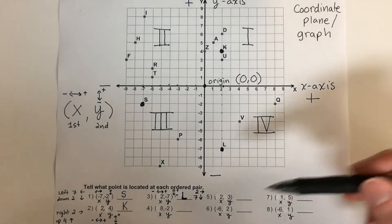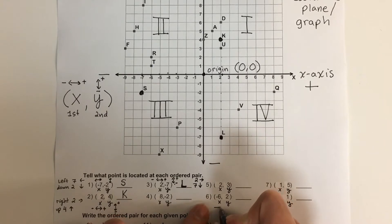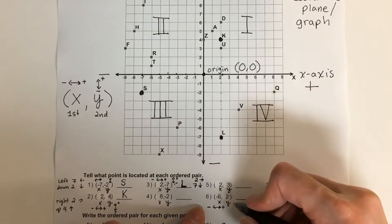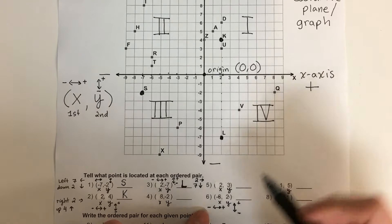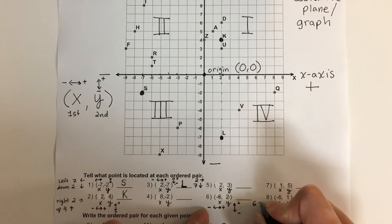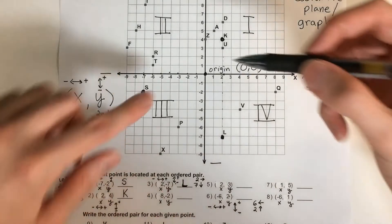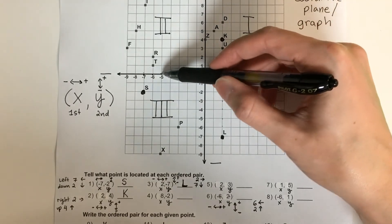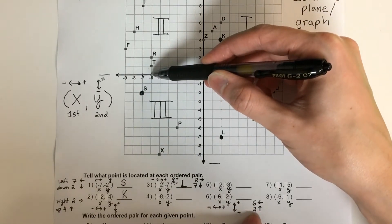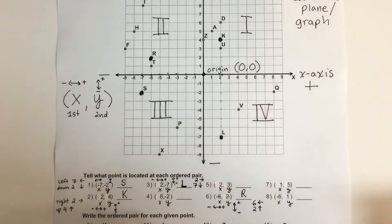Let's go ahead and try number six. For this one, negative six is x — that's left and right. Left is negative, right is positive. Two is y — y is up and down. Up positive, down negative. Negative six means six to the left. Positive two means two up. Start in the middle. Six left: one, two, three, four, five, six. Two up: one, two. That's R.